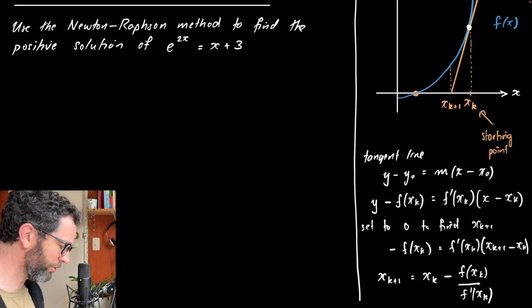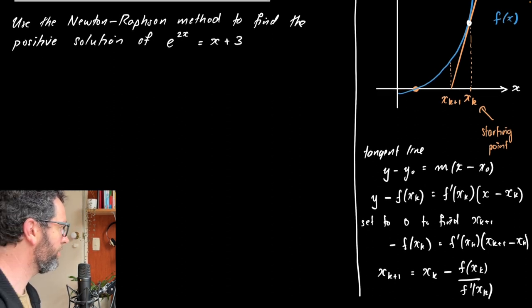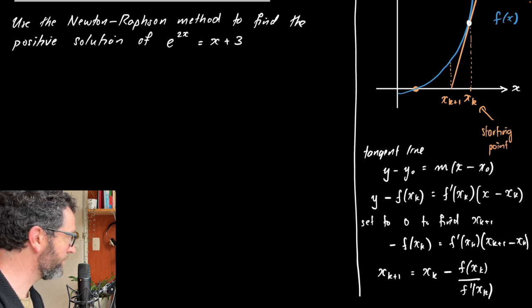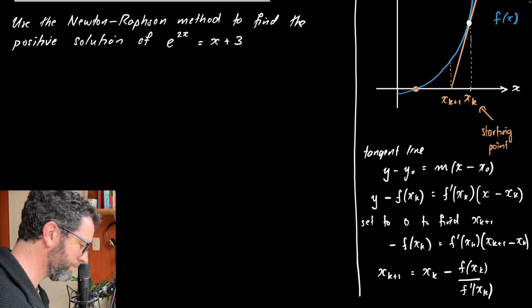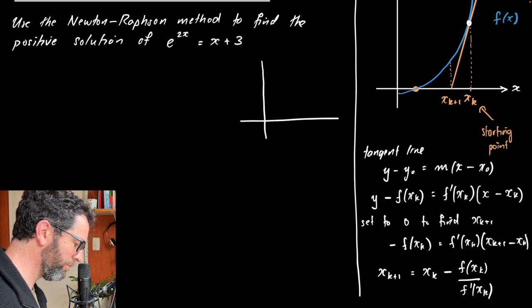Okay, so let's just see how it works with this problem that we've got here. So we want to use the Newton-Raphson method to find the positive solution of e to the 2x equals x plus 3. And if you try and solve this one yourself, you'll have a lot of difficulty because you cannot actually find an analytical solution there. So it often pays to have a little bit of a sketch of what's going on, just so we are a little bit clear about what we should expect to find here.